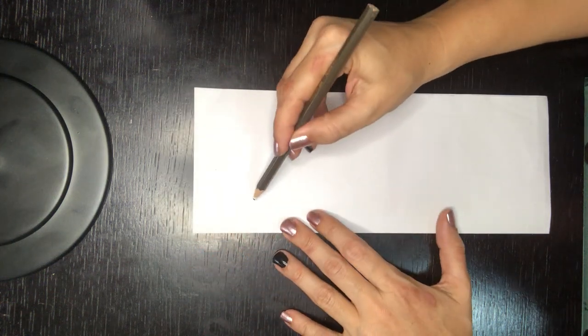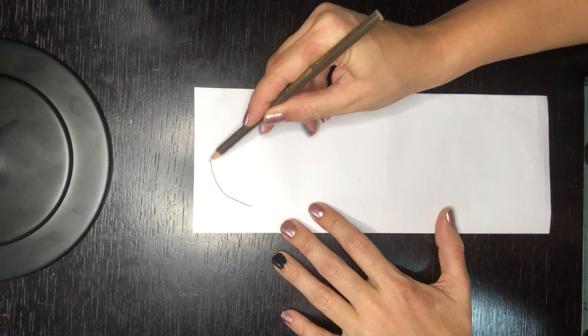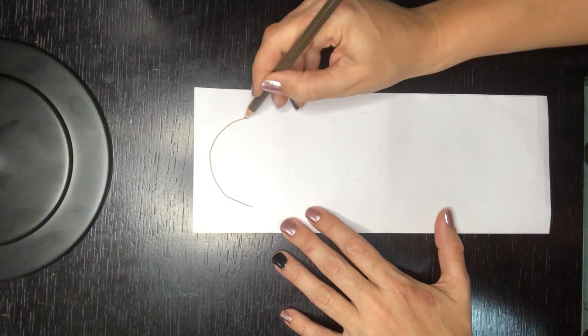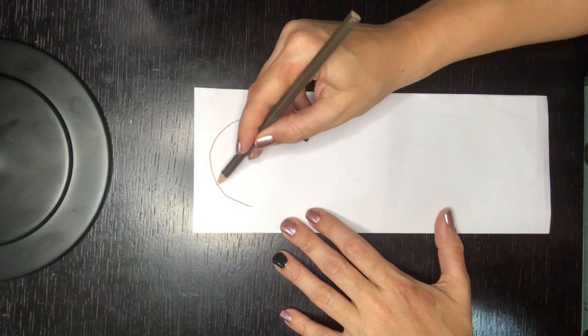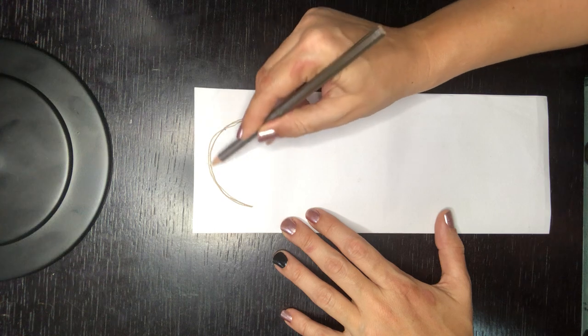So we're going to draw a rainbow shape or half of a circle. Okay once you have it here don't worry so much about the lines because you are going to cut this out.